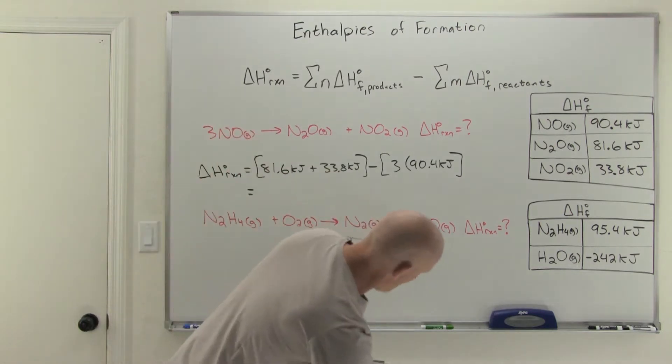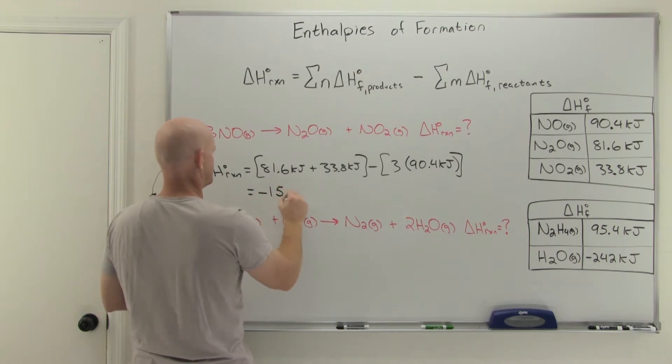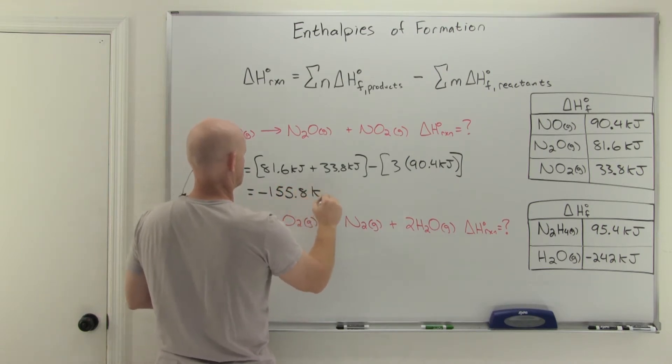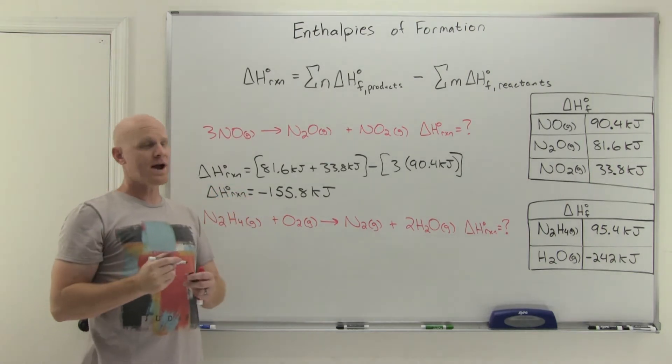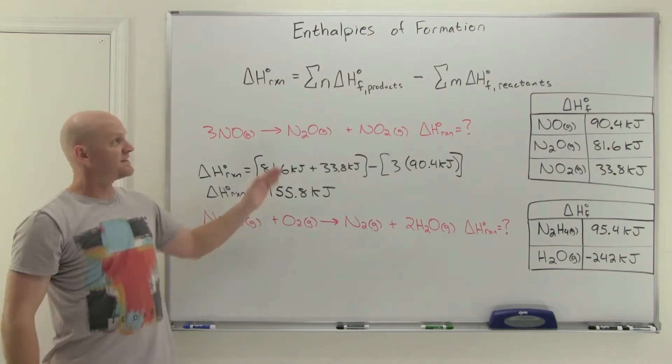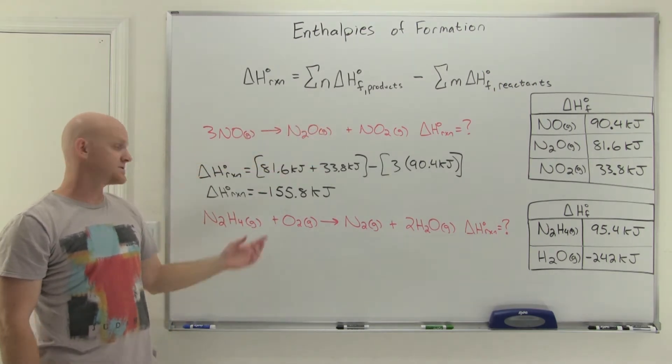We'll pull out that handy-dandy calculator. So 81.6 plus 33.8 minus 3 times 90.4. Negative 155.8. That is the delta H of our reaction here. Little RXN is our shorthand for reaction in chemistry. This is exactly the same reaction of one of the two applications of Hess's law we used. When we did that, it came out to negative 156 kilojoules. The only reason it's coming out a little more exact here is because I rounded some of the numbers on the application of Hess's law.